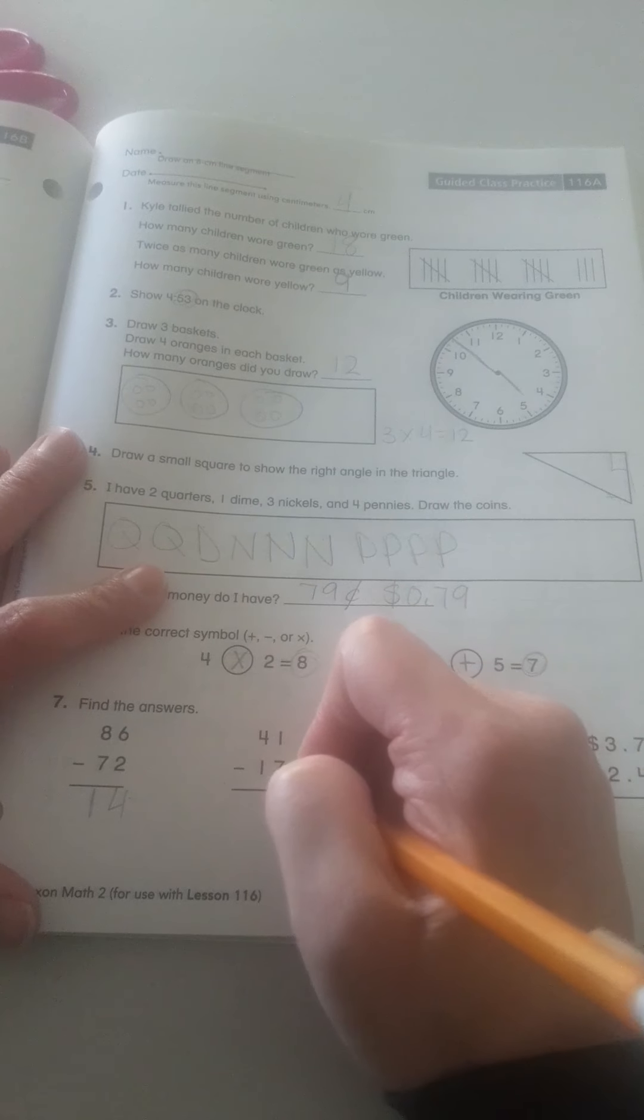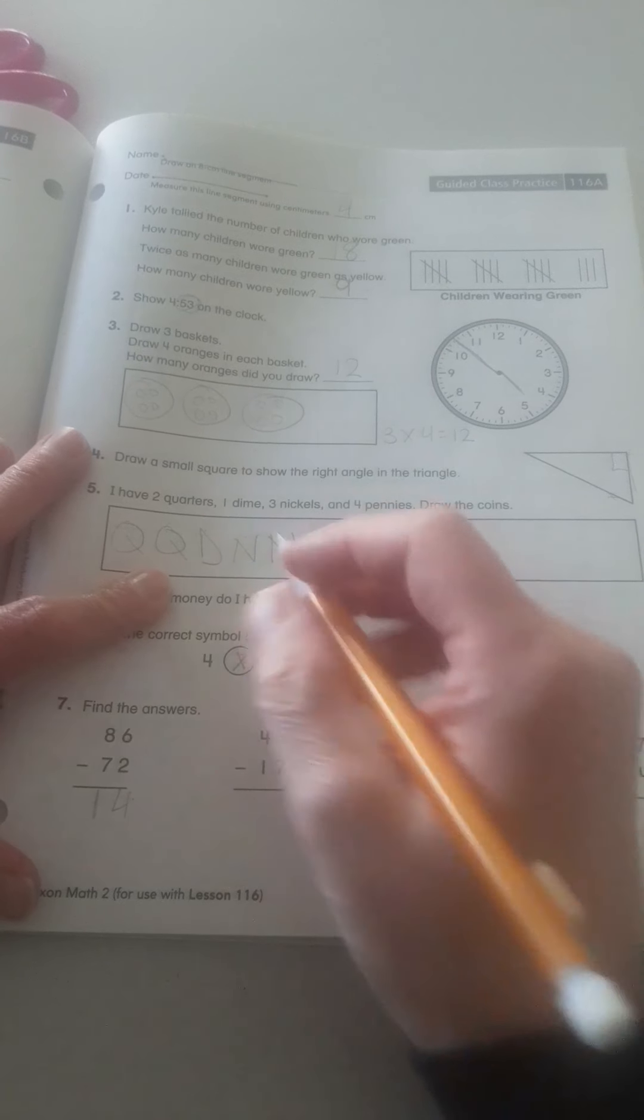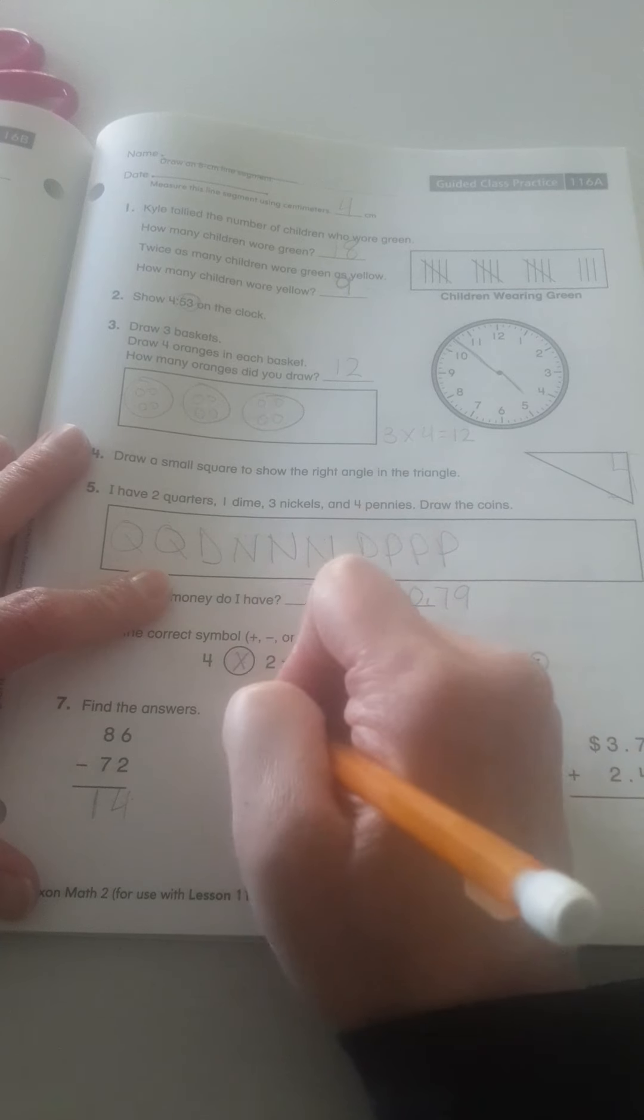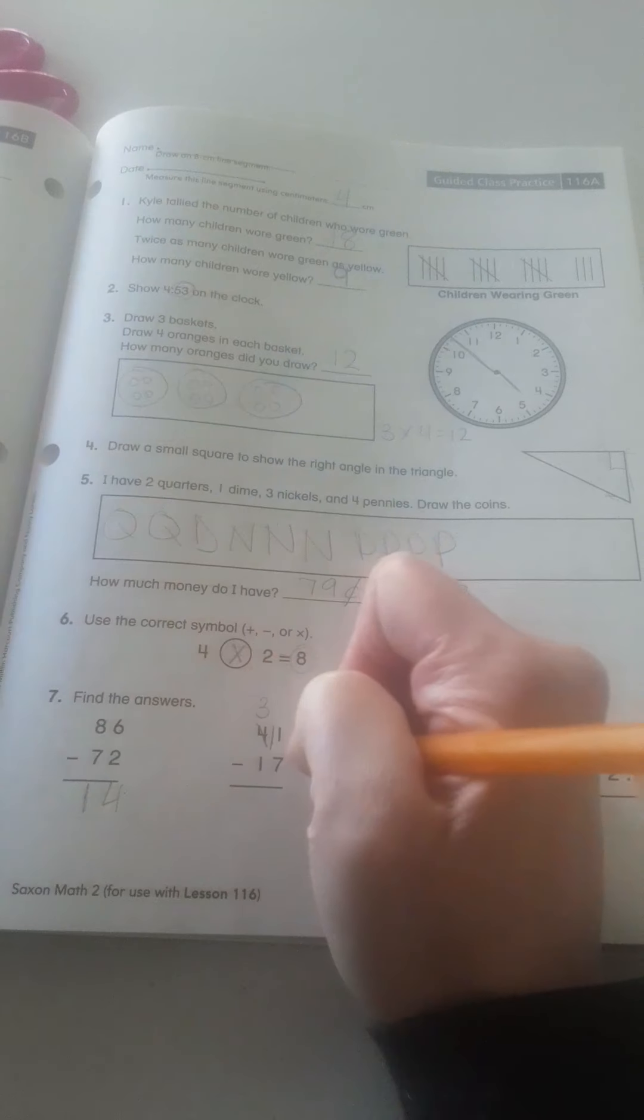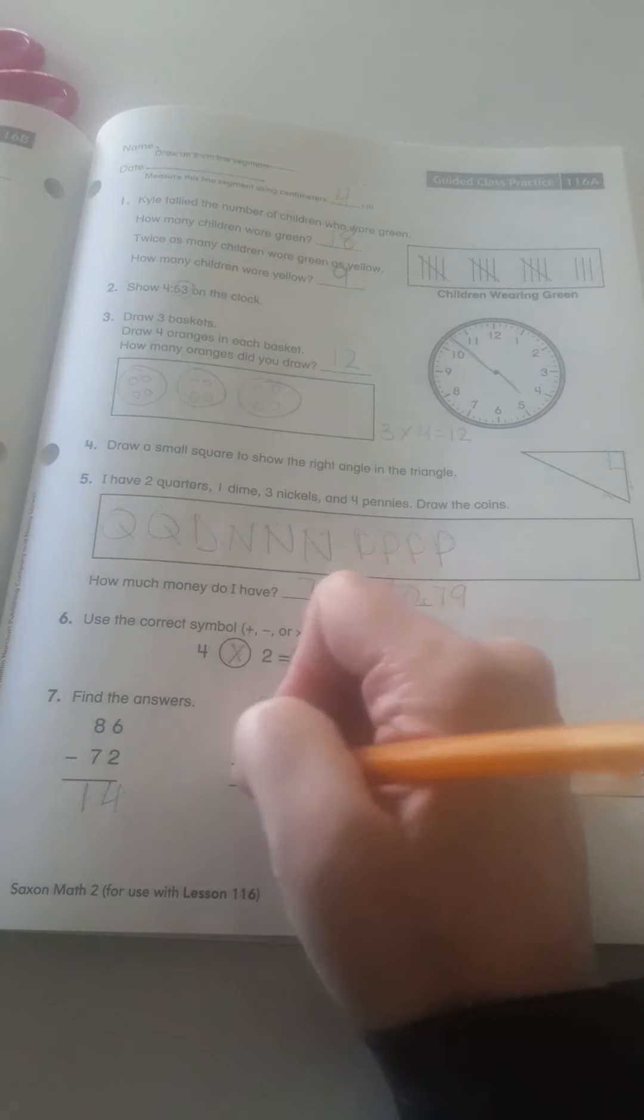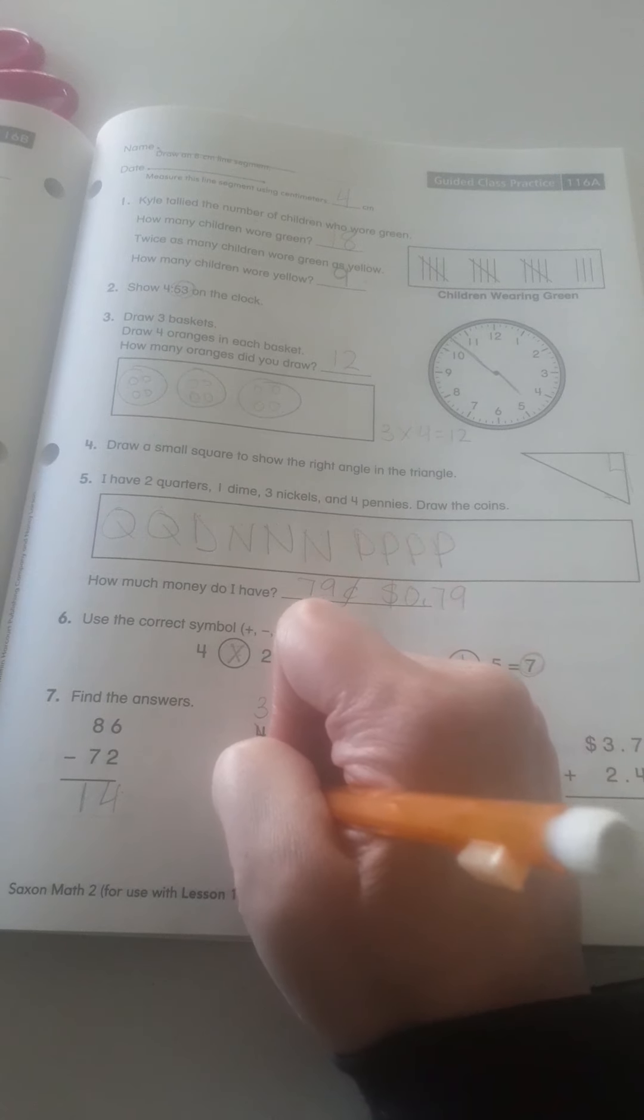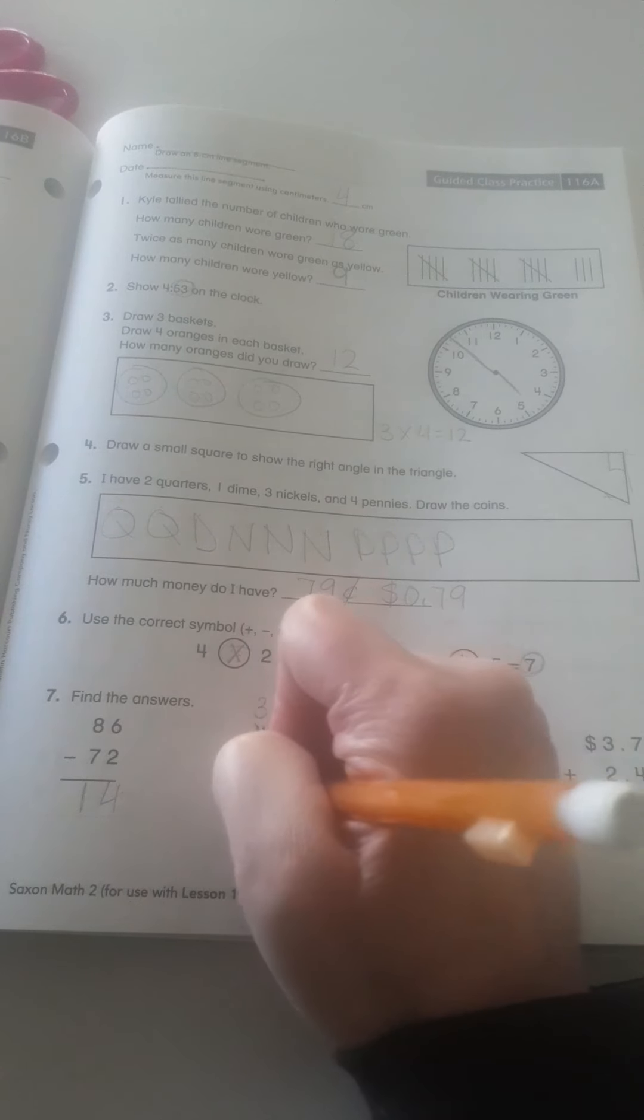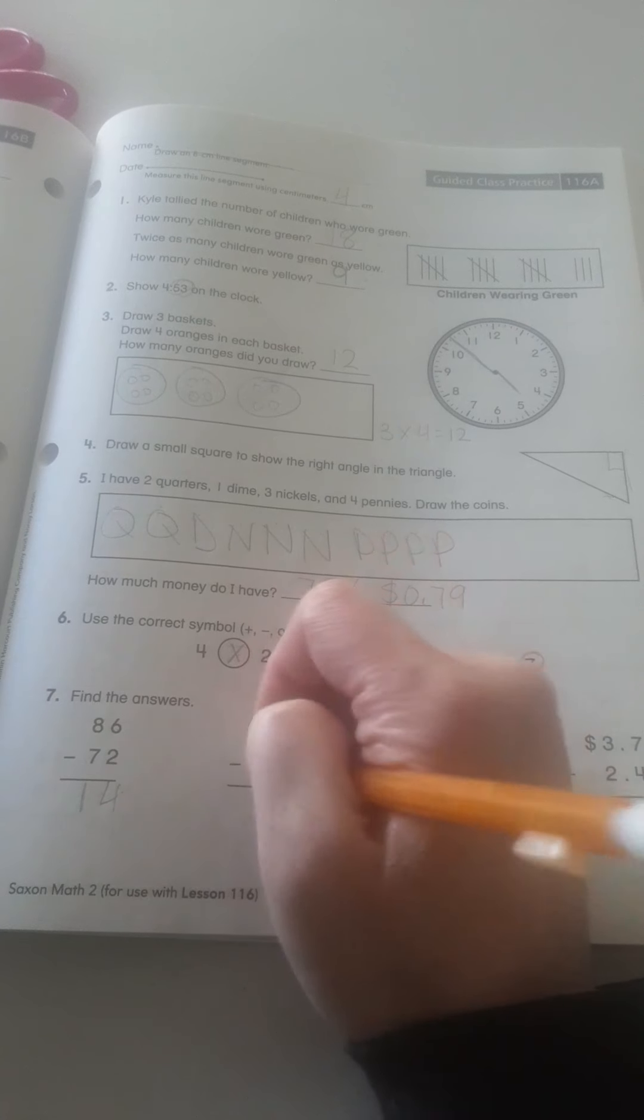1 minus 7. There's more on the floor. Go next door. Borrow 10 more. 4 becomes a 3. 1 becomes an 11. 11 minus 7 is 4. And 3 minus 1 is 2. 24.